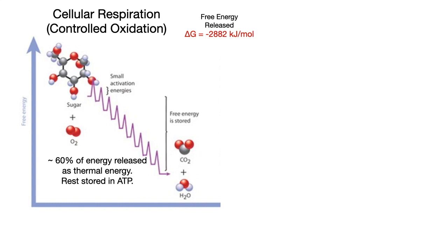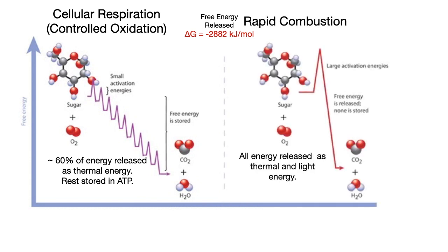And the rest is released and stored as molecules of ATP. We call this process controlled oxidation. However, the rapid combustion of glucose, like in the marshmallow example, looks like this, with a rather large activation energy. Overall the same amount of energy is released, but in this case it is all released as heat and light.